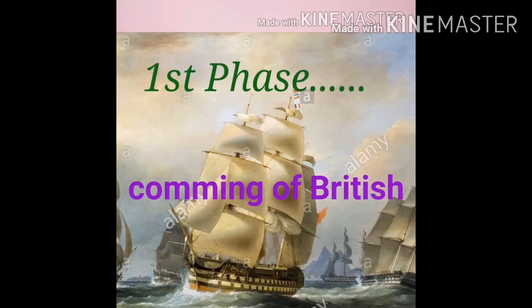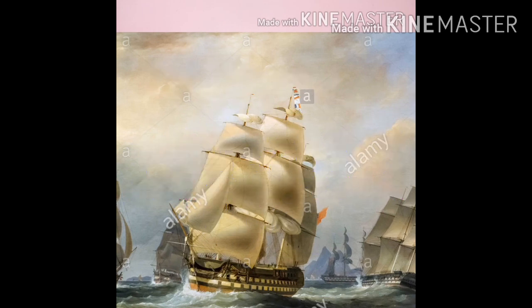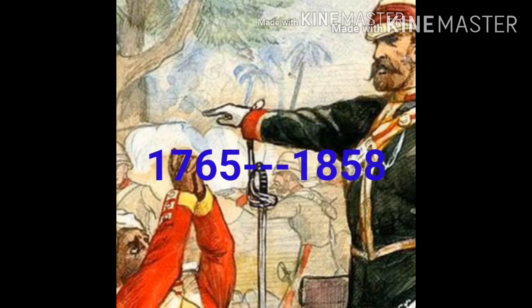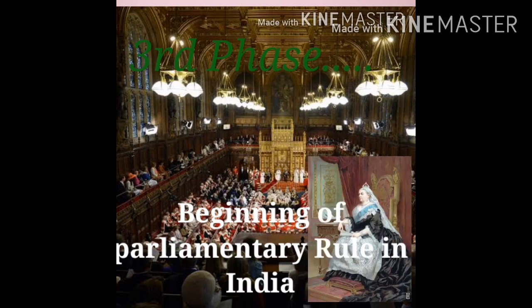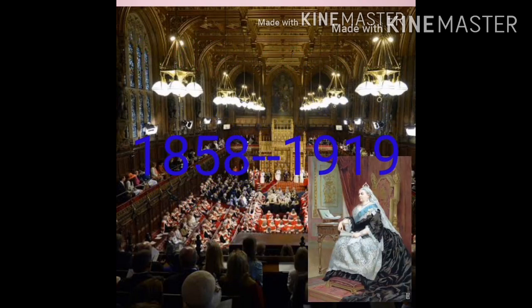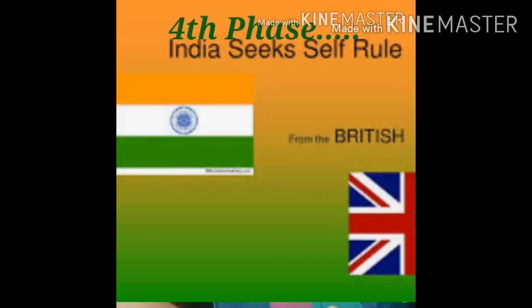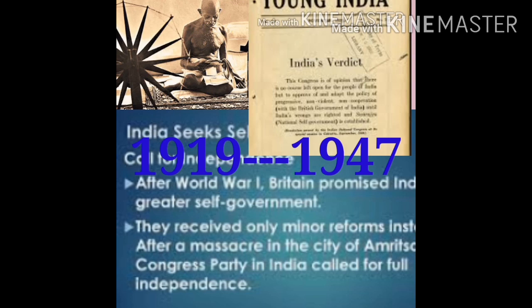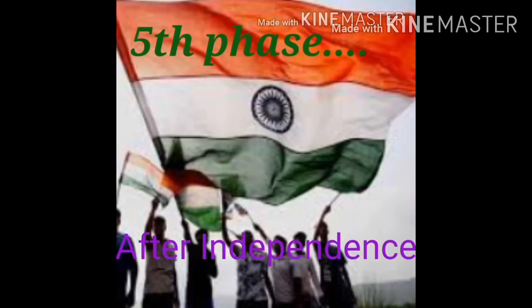The first phase is the coming of the British in 1600, extending up to 1765. The second phase is the beginning of British rule, from 1765 to 1858. The third phase is the beginning of parliamentary rule in India, from 1858 to 1900. The fourth phase is the introduction of self-rule, from 1919 to 1947. The fifth phase was after independence, from 1947 to 1950.